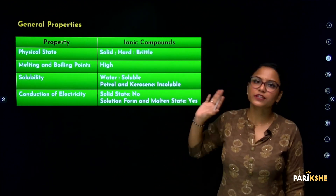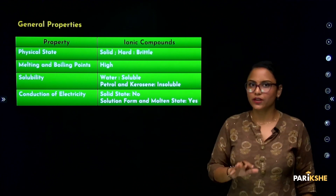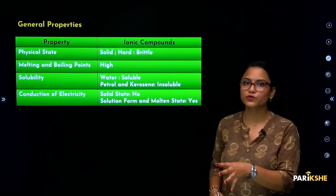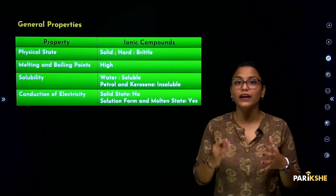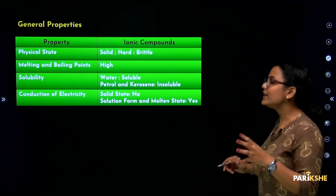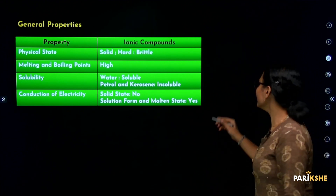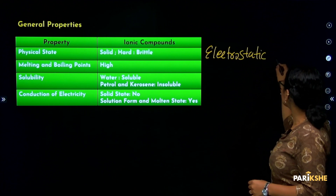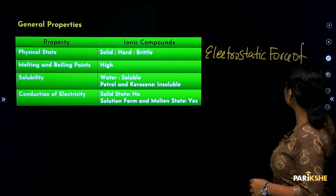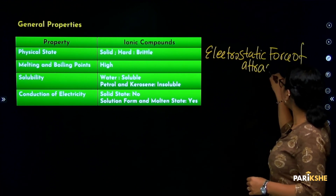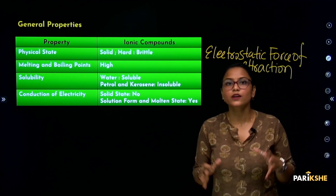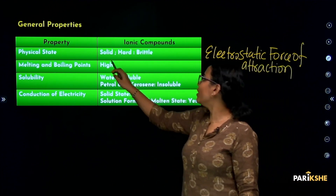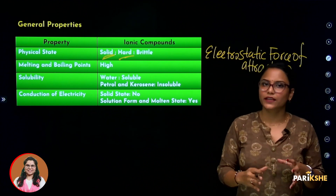Now let us discuss the observations and their explanations from the table. First is physical state. All ionic compounds are solid in state. The reason for this is the electrostatic force of attraction present within ionic compounds — discussed in the previous video. This electrostatic force of attraction is very strong, and it holds the atoms tightly together. So ionic compounds are solid in state and hard in nature.